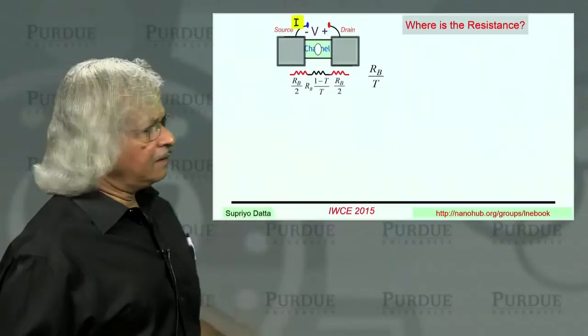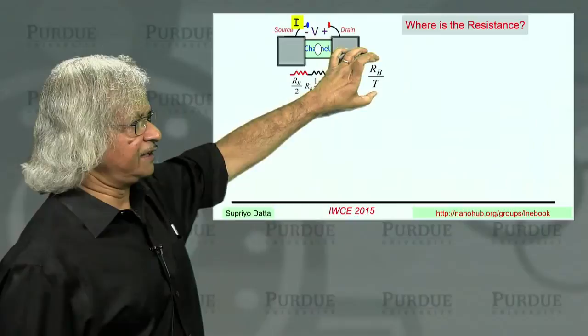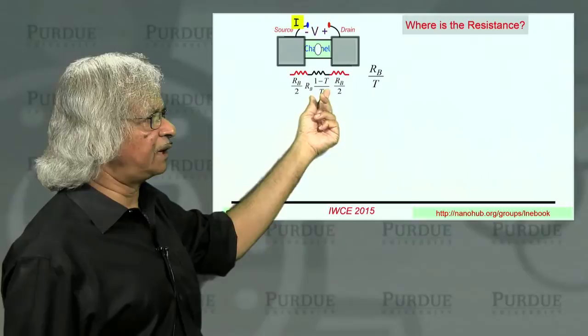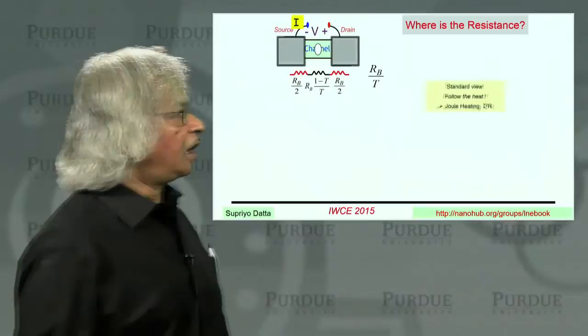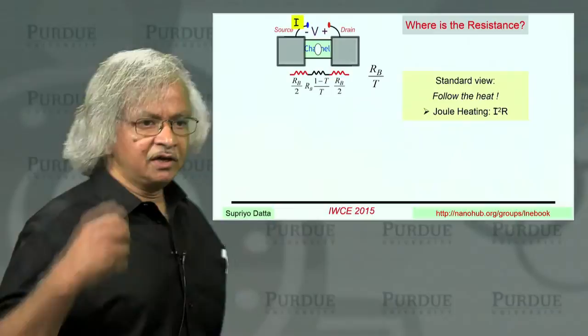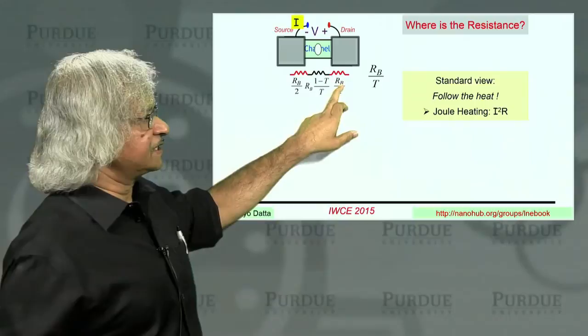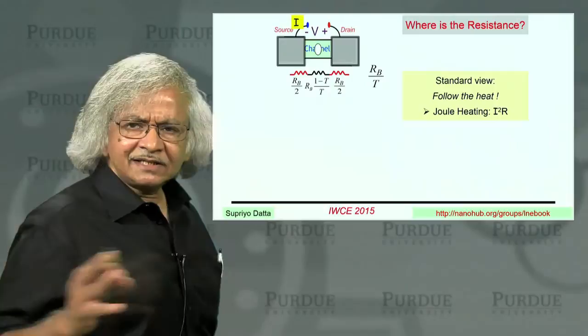Now, this you could say, well, is experimentally verified. We understand this where the overall resistance. That would be like the Landauer formula. But what allows us to associate part of it with the interface and part of it with the middle, with the channel? And this is where the common wisdom is if you want to locate the resistance, follow the heat because resistance gives rise to heating. This is Joule heating. Anytime there's a resistance, there's some heating there. And so you'd think that if I want to locate the resistance here, what I'm saying is there's a heating right there or a heating right here. But that's not at all true.